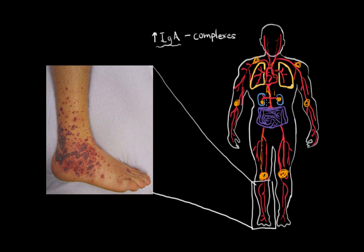These complexes also have an affinity to get stuck in the intestines, so you may see bloody diarrhea or bloody stools — known as melena, which is dark stools, or hematochezia, which is bright red blood in the stools. You can also see abdominal pain.